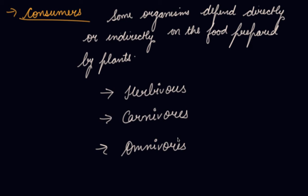Omnivores such as humans, bears, and crows consume both plants and animals. So we have divided the consumers into three parts, which we have already discussed in the previous video.